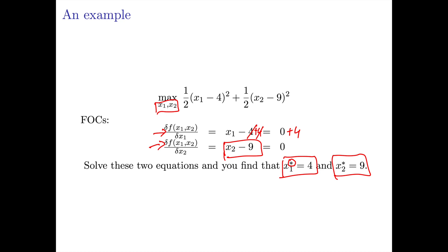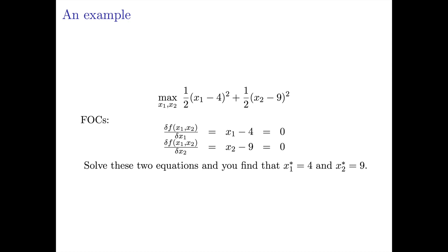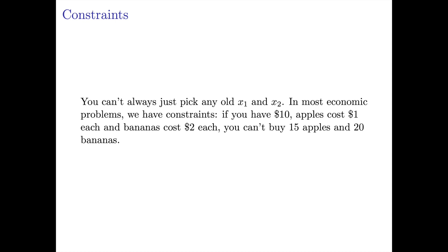One important feature of this particular maximization problem is that you could pick any x1 and any x2 you want, so we call this an unconstrained maximization problem. There's nothing to constrain your choice of x1 and x2. But you can't always just pick whatever x1 and x2 you want. In a lot of economic problems, we're going to have constraints. For instance, you might have $10, but apples cost $1 and bananas cost $2.